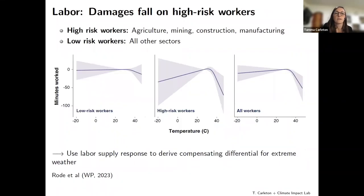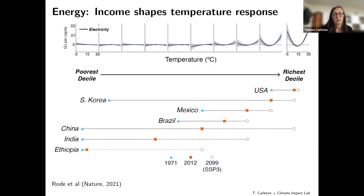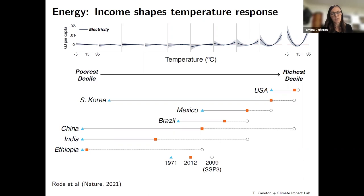For labor, the inequality falls along sectoral lines — workers spending time in agriculture, mining, and construction industries who are exposed to the climate are suffering effects on their labor supply and disutility of working under extreme conditions. For energy, income is critically important: the vast majority of the global population doesn't have resources to increase energy expenditures in response to extreme temperatures, so effects are really isolated to wealthy places.